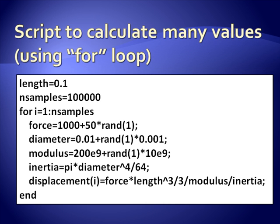And I'll end up with 100,000 elements in the displacement vector, each of them being a random value for this output.